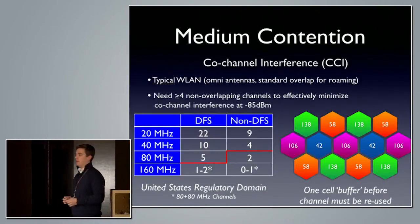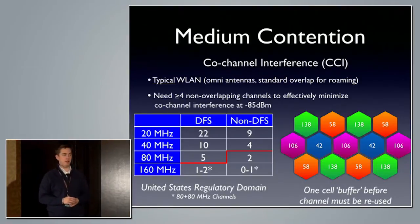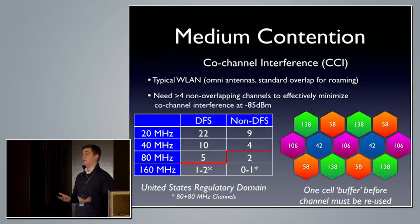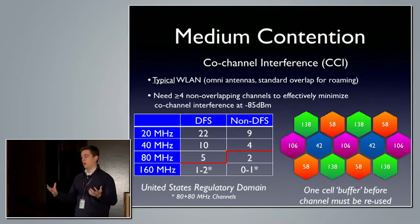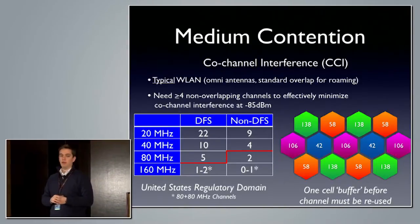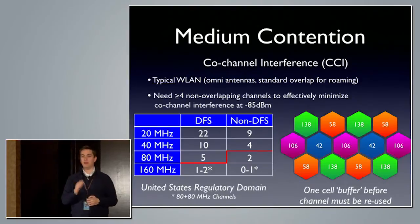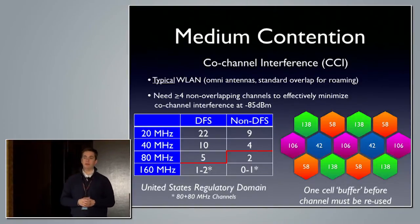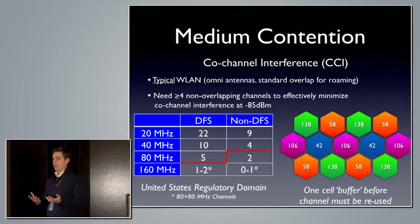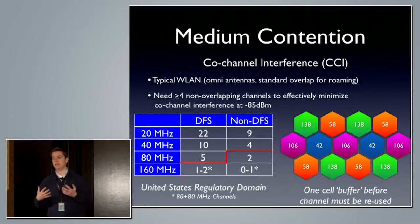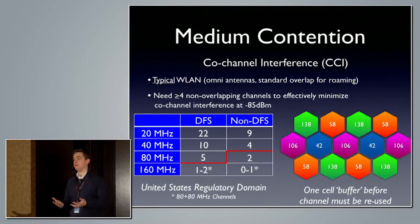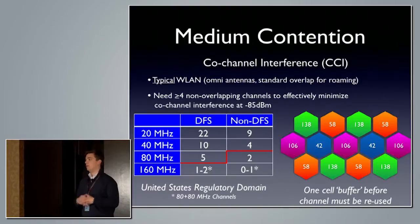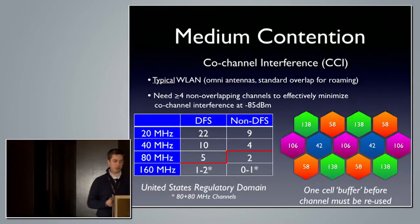There are two factors that really play into medium contention. The first is co-channel interference: the more APs operating on a given channel within range of one another, the more they share the bandwidth. Our capacity is essentially per channel or per cell — if APs are on the same channel and within range of one another, they share the capacity, plain and simple. I see so many wireless networks where APs stomp over one another, especially in 2.4 GHz, because designers think adding more APs gets more capacity. But if they share the same channel, you don't add anything — you're sharing the capacity of that channel.